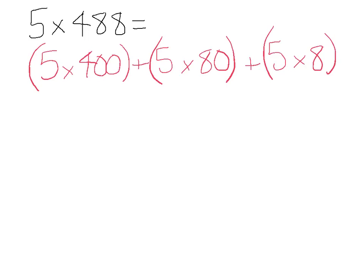And then we work out those individually. So 5 times 400, we know that is 2000. 5 times 80, we know that's 400. 5 times 8 is 40.